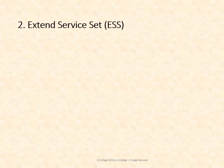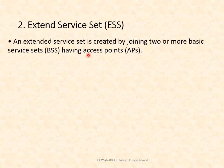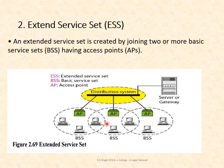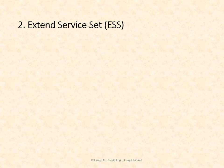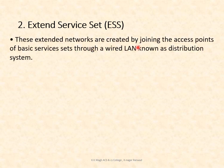An extended service set (ESS) is created by joining two or more basic service sets that each have an access point. For example, there can be one BSS with an access point, another BSS with an access point, and a third BSS with an access point — all three access points connected through the distribution system to a server or gateway, forming an extended service set. These extended networks are created by joining access points of the BSS through a wired LAN called the distribution system.